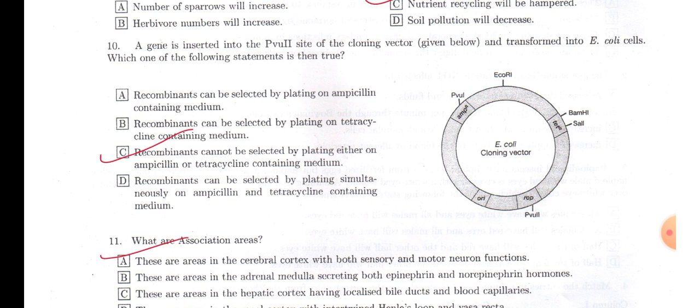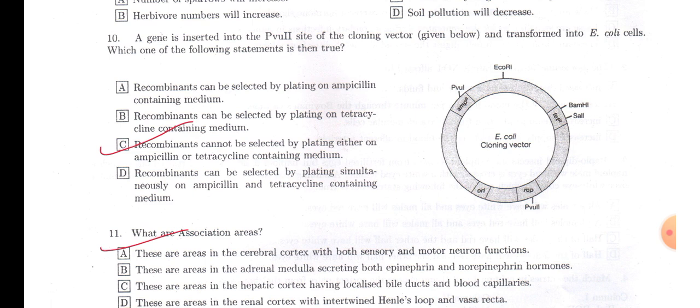In question number 10, a gene is inserted into PBU2 site of cloning vector and transformed into E. coli cells. Which one of the following statements is then true? Look, the PBU2 site, within the PBU2 restriction site, there is no antibiotic resistance gene, so it will not hamper the activity of those antibiotics, that is ampicillin and tetracycline.